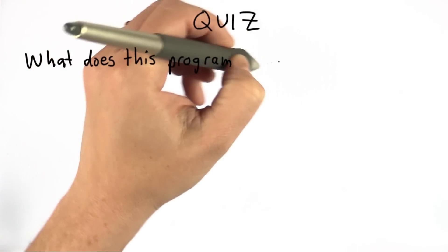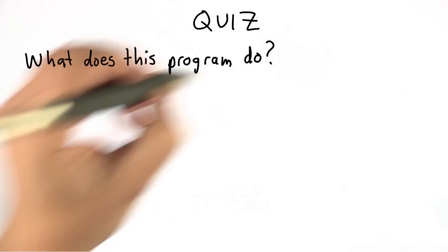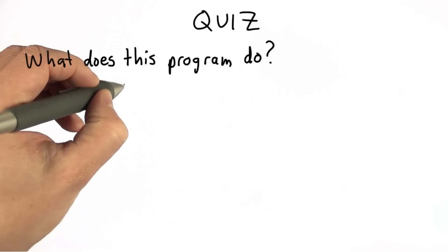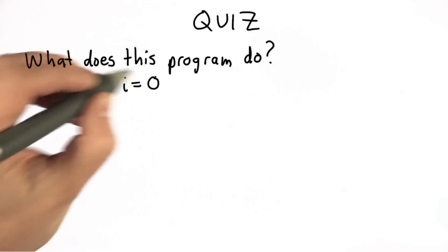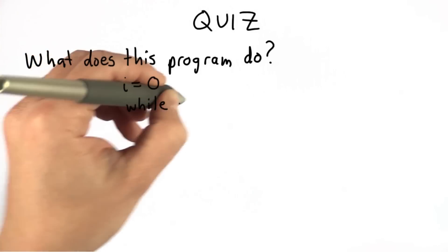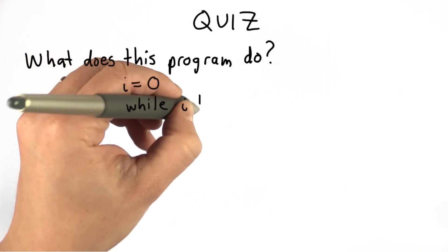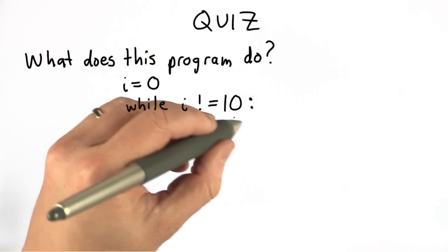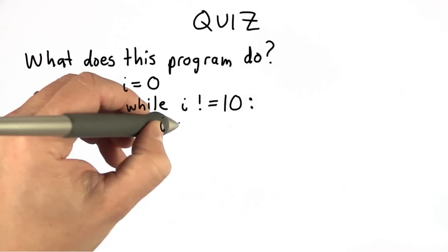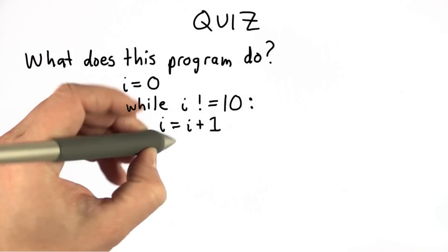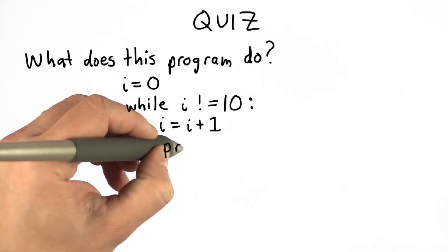So to see that you understand while loops, we'll have a quiz. So the question is, what does this program do? Here's the program. We start by assigning 0 to i. We have a while loop where the test is not equal to 10. So the test is i is not equal to 10. Then we have i equals i plus 1. So we're assigning to i the value of i plus 1. And then we're printing i.